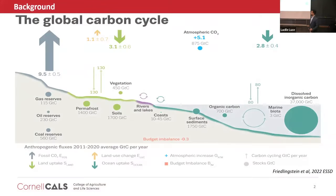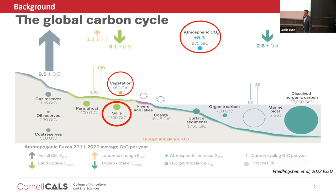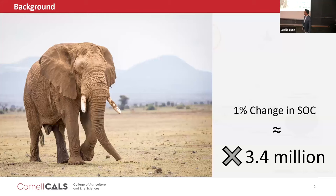So, why is soil important? Soil stores the largest amount of carbon compared to vegetation and atmospheric carbon combined. Even a small change in soil organic carbon can lead to a significant effect on the climate. A 1% change in soil organic carbon could be equivalent to 3.4 million times an adult elephant. Just imagine a state full of 3.4 million elephants.